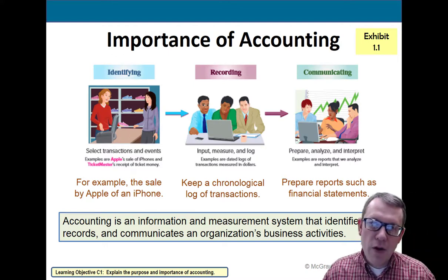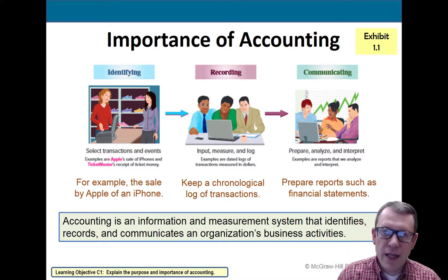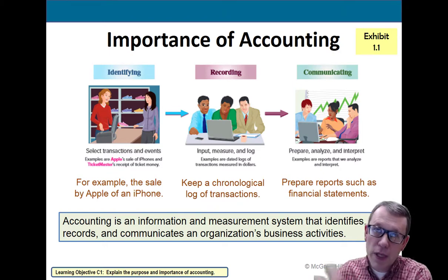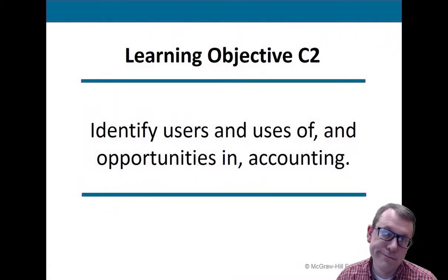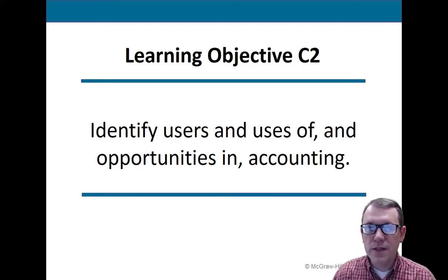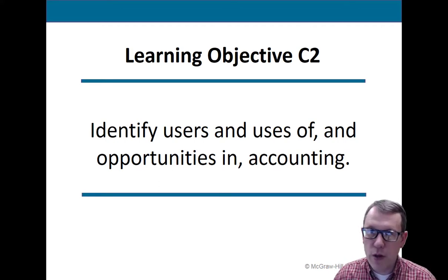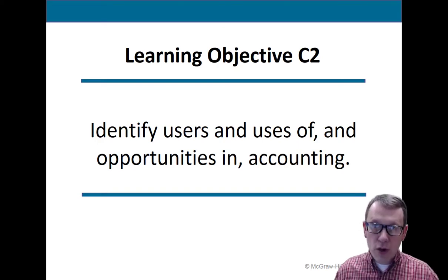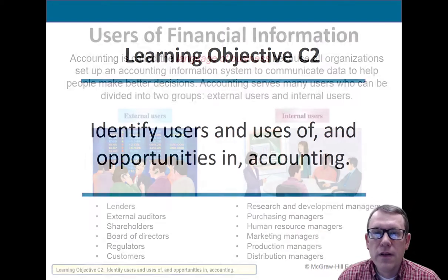As we cover the importance of accounting, the main idea is that we're going to be identifying transactions and events that need to be recorded, recording them, and then communicating what we've recorded so people can know what happened in our business. That's the importance of accounting. A lot of times we call these people stakeholders — they have a specific reason for wanting to know what's going on in our business: they want to invest in us, they're managing the business, or they want to maybe work for the business.